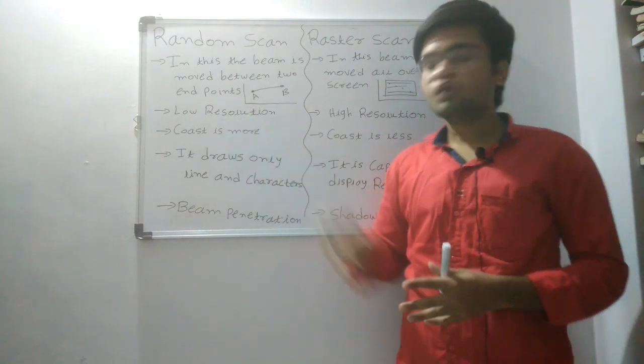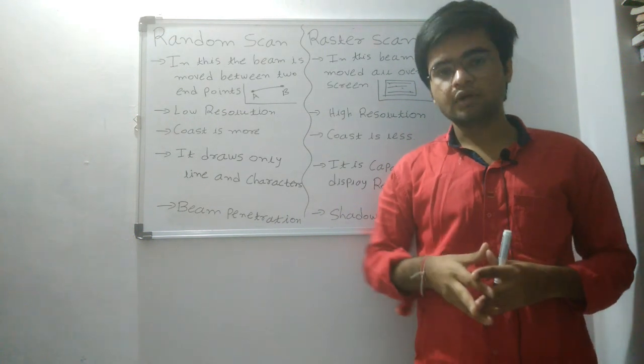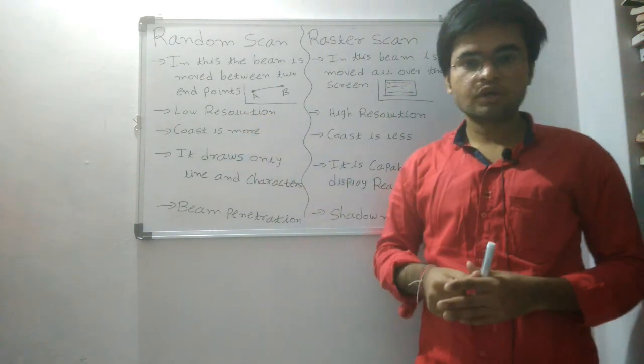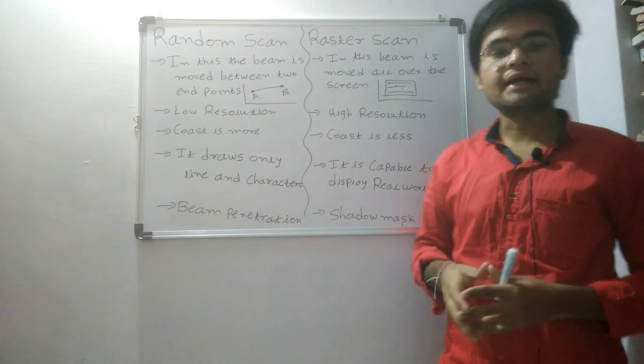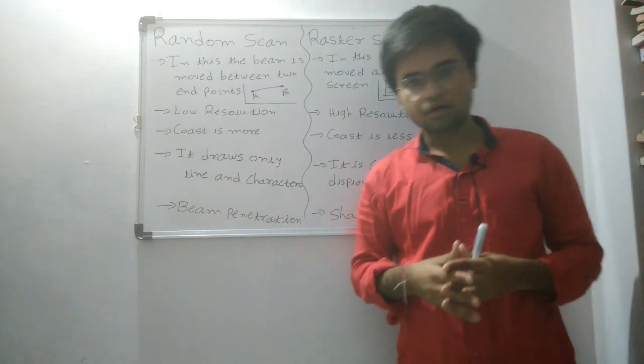Another difference is it has lower resolution. Generally, random scan display produces only four types of color, so it has lower resolution. But raster scan display has higher resolution because it produces thousands and millions of colors.